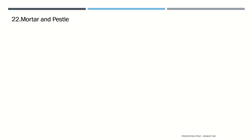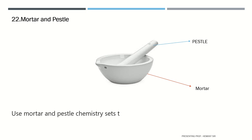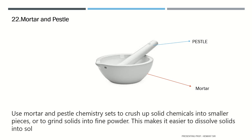A mortar and pestle is used in chemistry sets to crush solid chemicals into smaller pieces or to grind solids into fine powder. This makes it easier to dissolve solids into a solvent when making a solution.